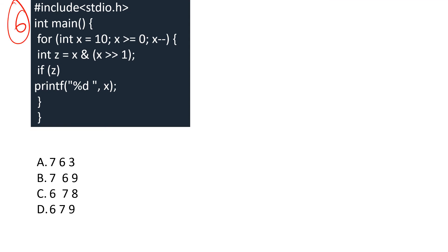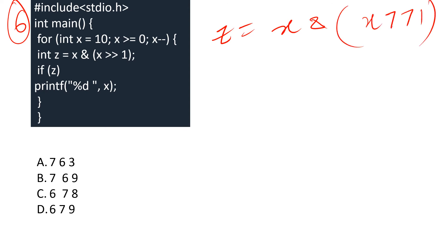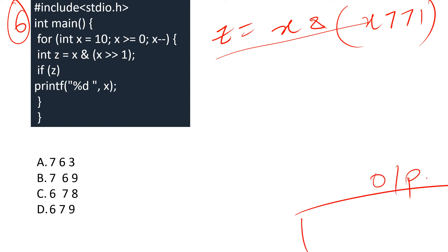Here comes the sixth question. A basic for loop runs from 10 to 0, so x takes values 10, 9, 8, 7... down to 0. We declare an integer z = x AND (x right-shifted by 1). The logic is: if z is non-zero, we print x. So the output is the values of x for which z is non-zero.